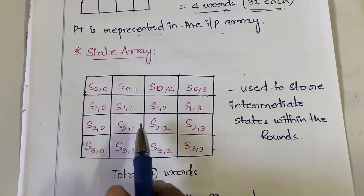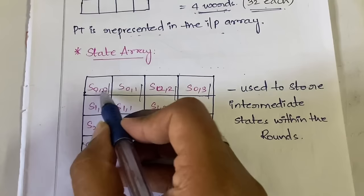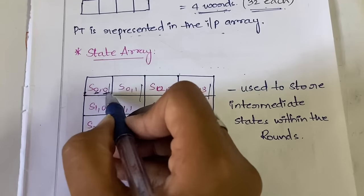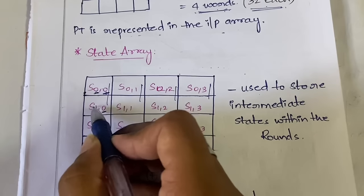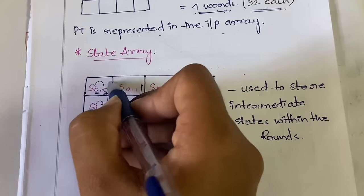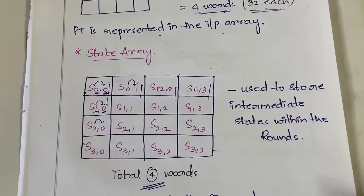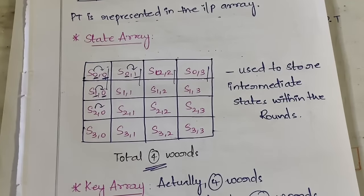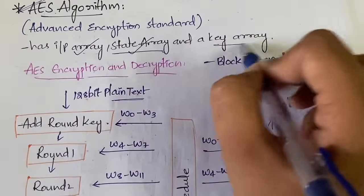In the state array we have the zeroth word, first word, second word, and third word. The notation S[row, column] — for example S[0,0] — the first index represents the byte and the second represents the word. So the zeroth byte of the zeroth word, first byte of the zeroth word, zeroth byte of the first word, and so on. This is how the state array is used to store intermediate results.